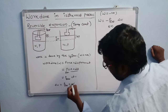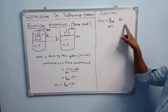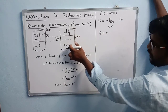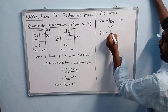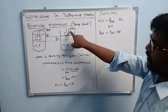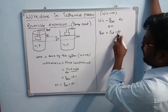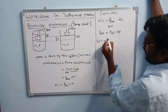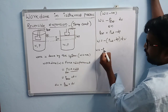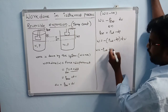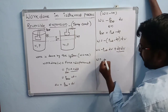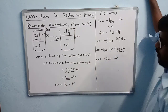For small changes we write dV. In a reversible process, internal pressure equals external pressure. So P_external = P_internal − dP. Substituting: dW = −(P_internal − dP) × dV. On multiplication: −P_internal·dV + dP·dV. Since dP·dV represents very small changes, we neglect it. Therefore, work done equals −P_internal × dV.